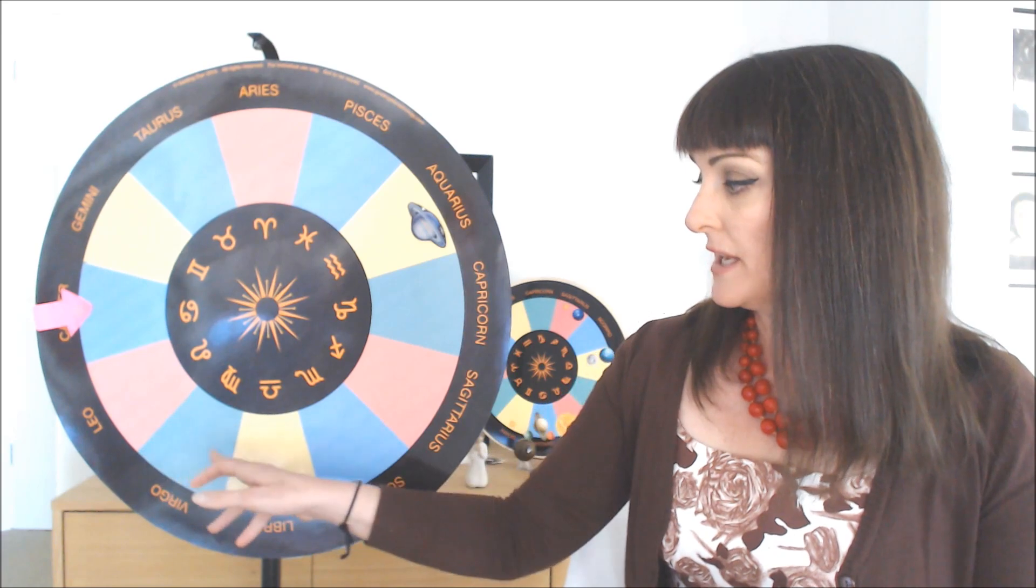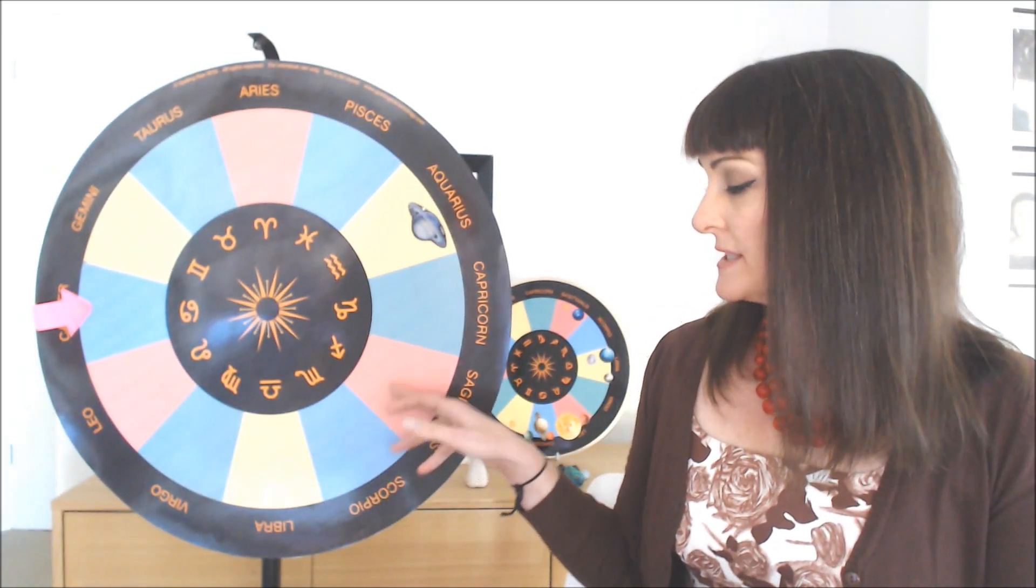But we count, we work out what our rising sign is in whole sign astrology. And we count eight houses. One, two, three, four, five, six, seven, eight in whole sign astrology. And that gets us to our eighth house.